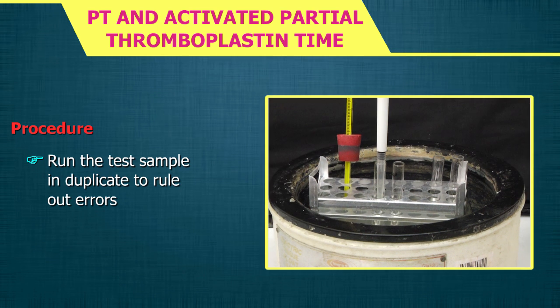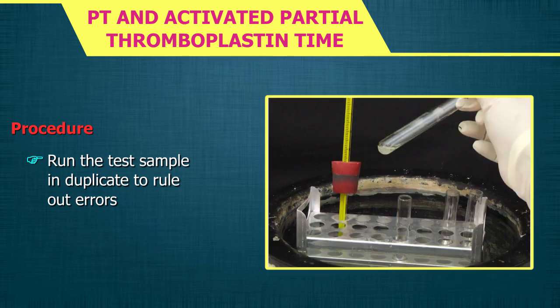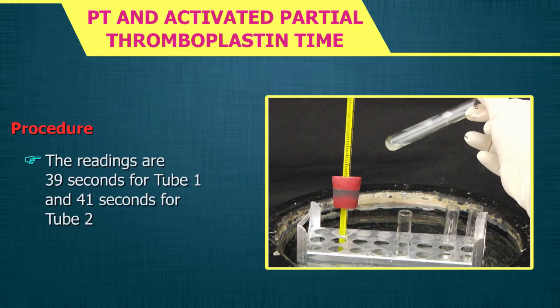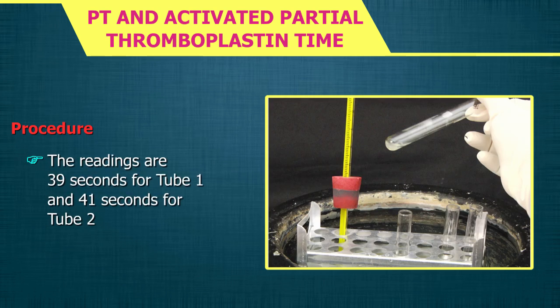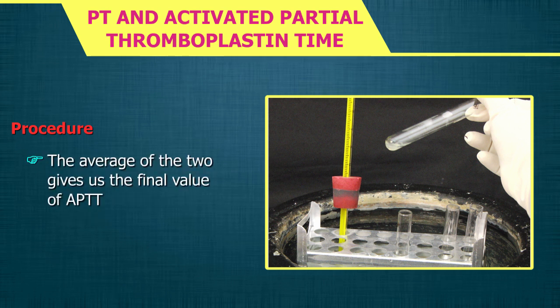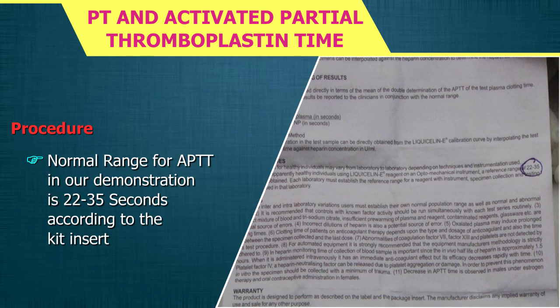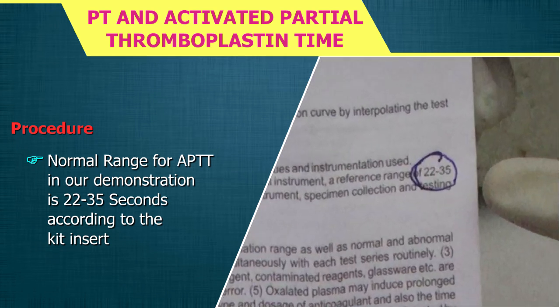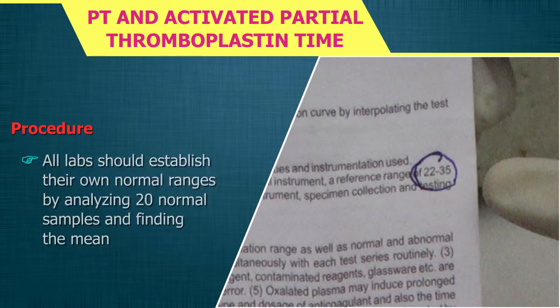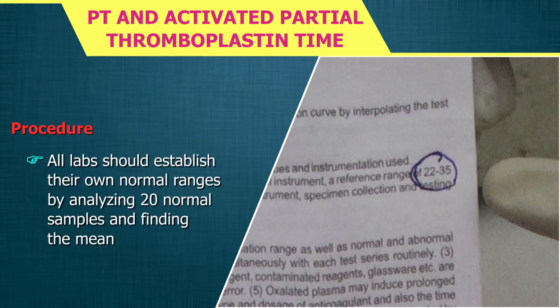Run the test sample in duplicate to rule out errors. The readings are 39 seconds for tube 1 and 41 seconds for tube 2; the average gives the final APTT value. The normal range for APTT in this demonstration is 22–35 seconds according to the kit insert; however, all labs should establish their own normal ranges by analysing 20 normal samples and finding the mean.